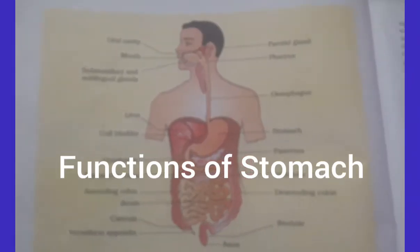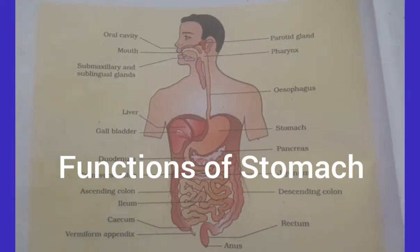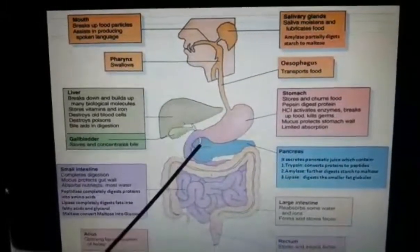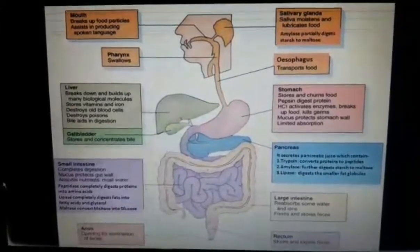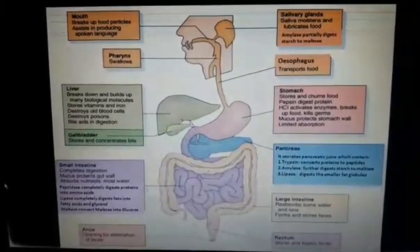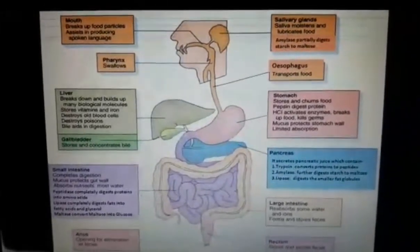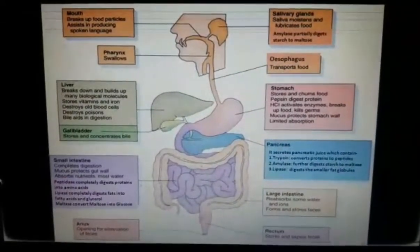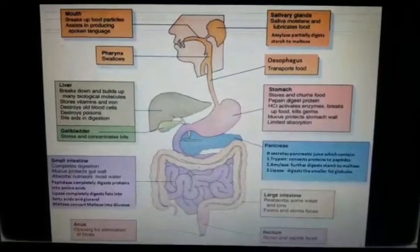Let's start the function of the stomach. The inner lining of the stomach contains gastric glands. The gastric glands secrete gastric juice that contains hydrochloric acid, a protein digestive enzyme called pepsinogen, and mucus.